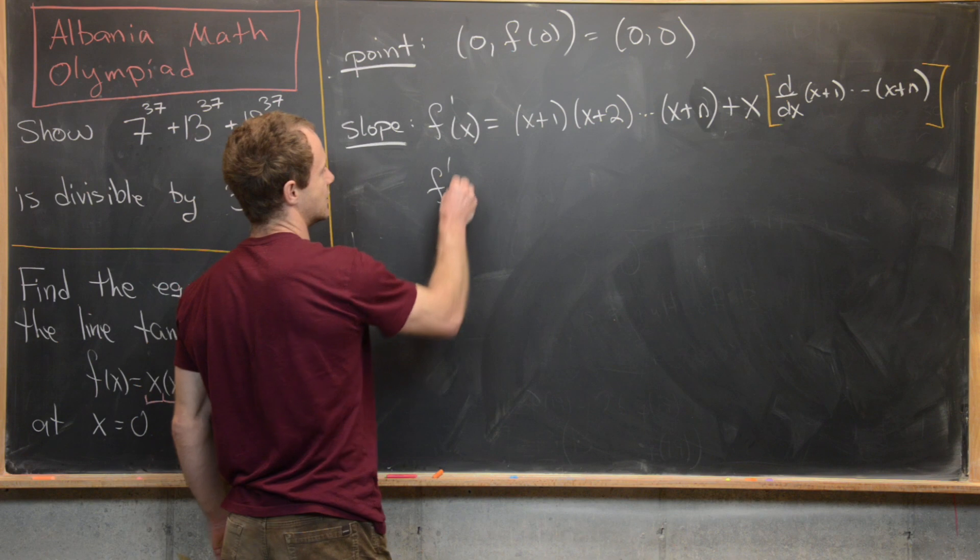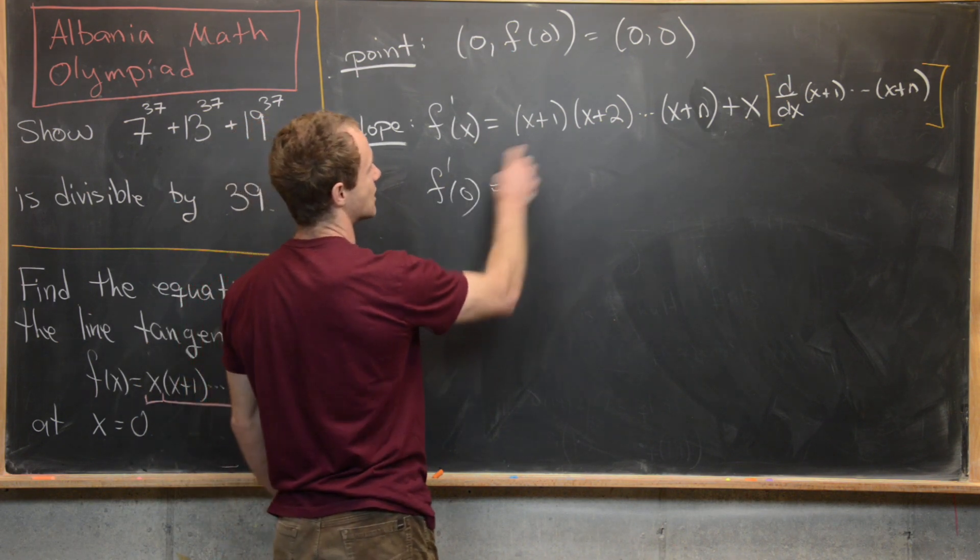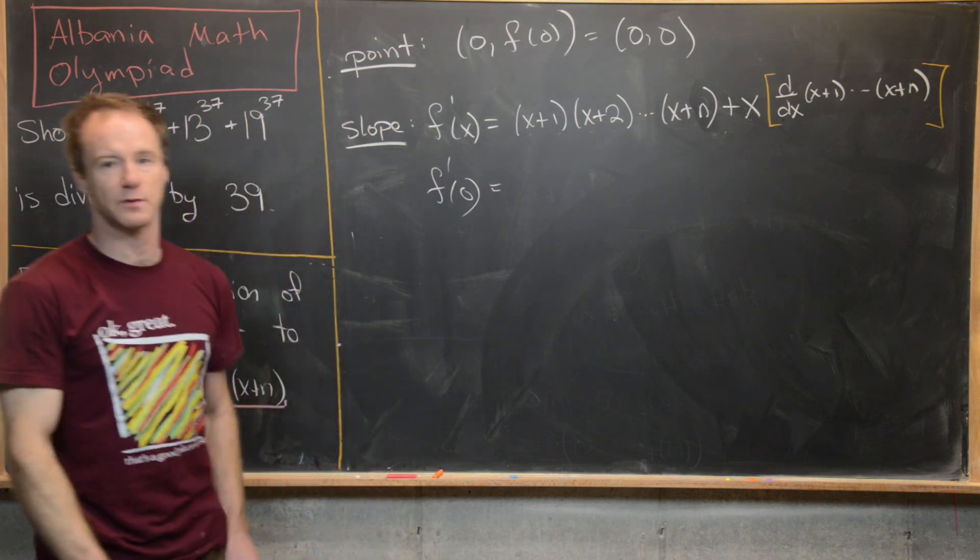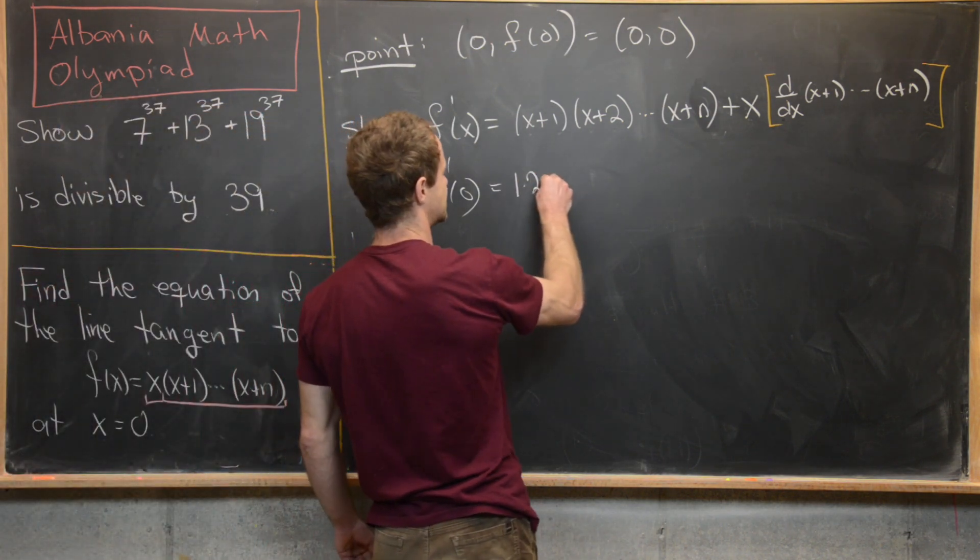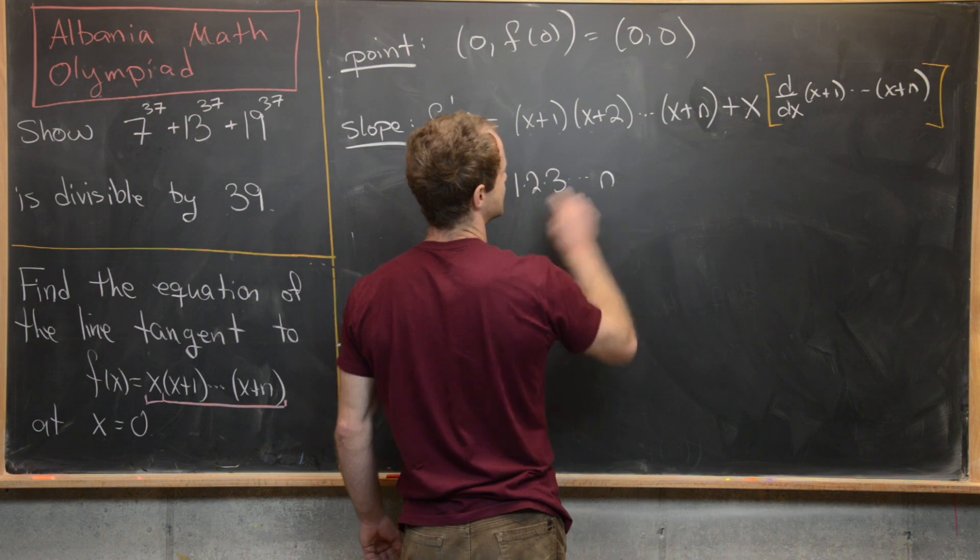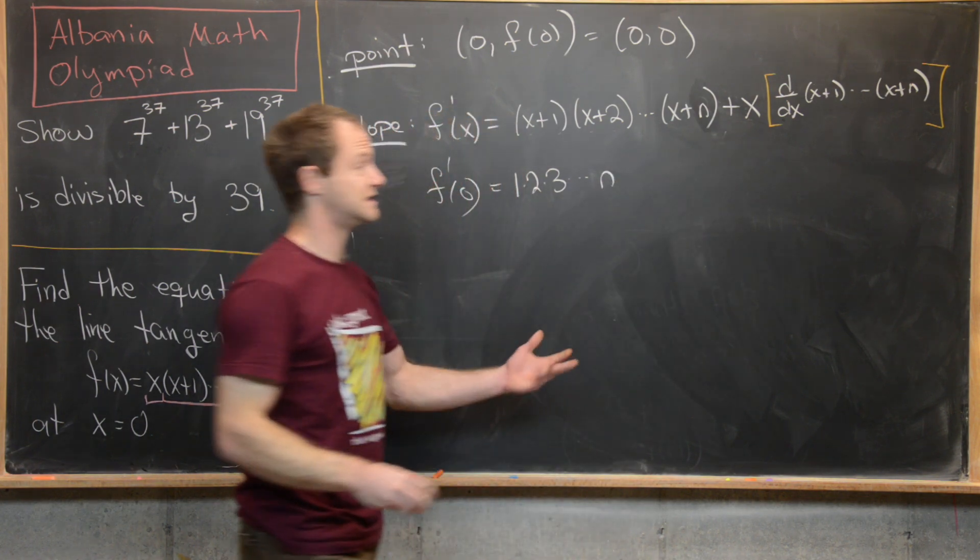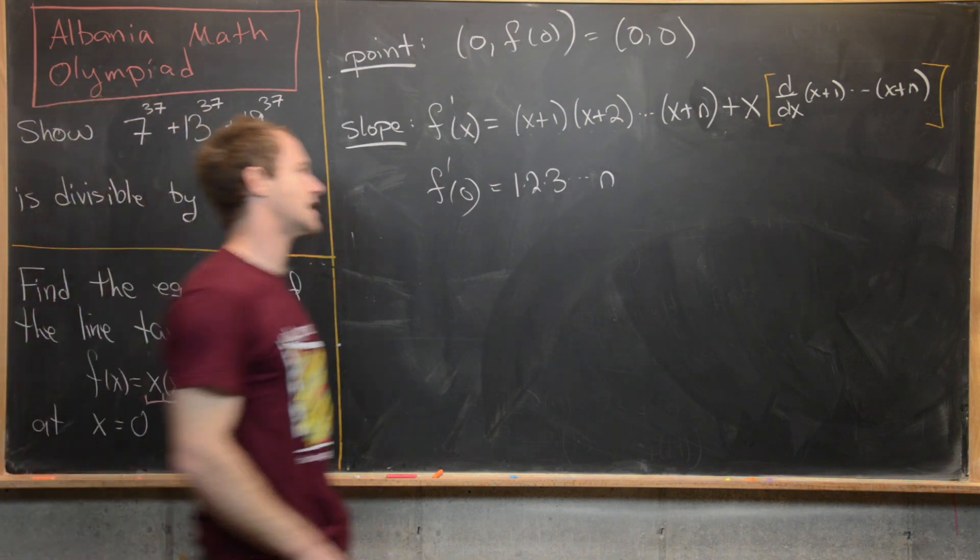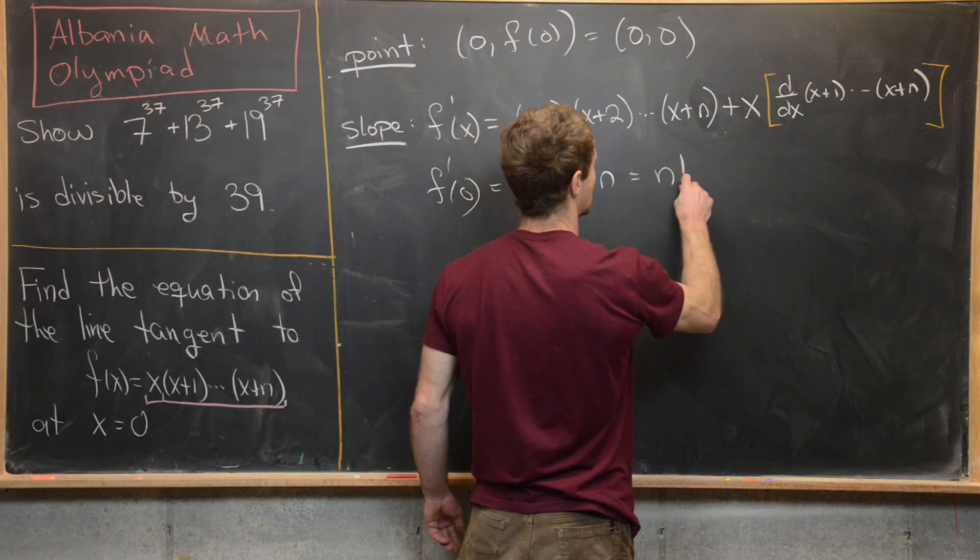So let's go ahead and notice that if I take f'(0), I'm going to get 0+1, 0+2, all the way up to 0+n. So I get this product 1 times 2 times 3, all the way up to n plus zero. So in other words, I have this rising product from one to n. But there's another name for that. And that's n factorial.